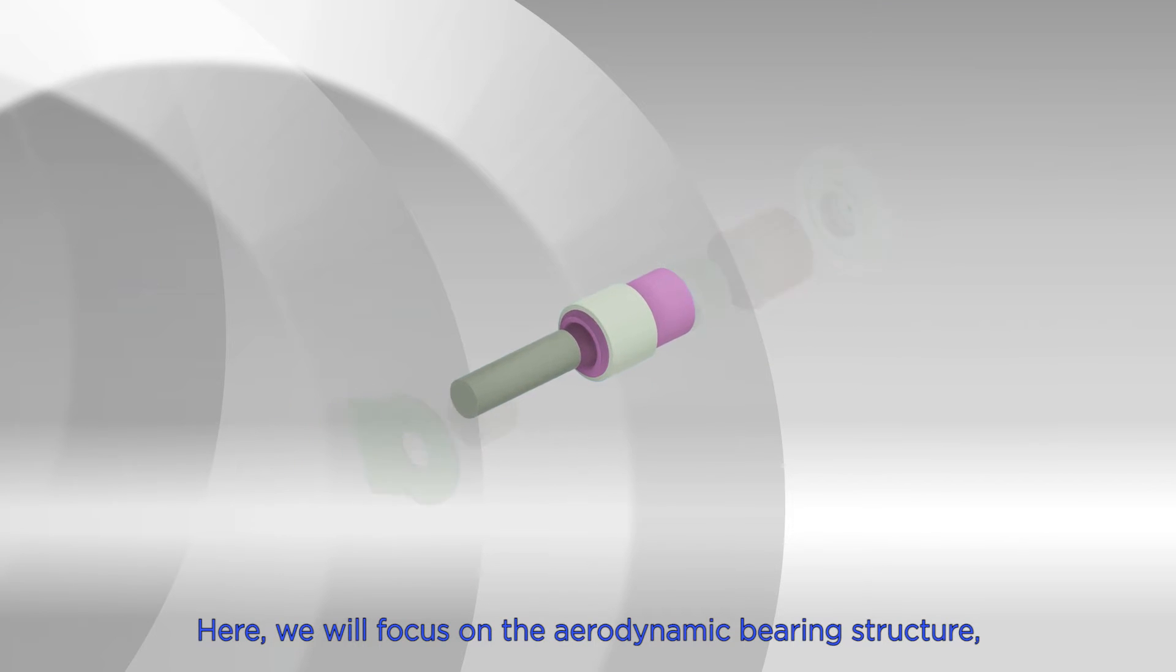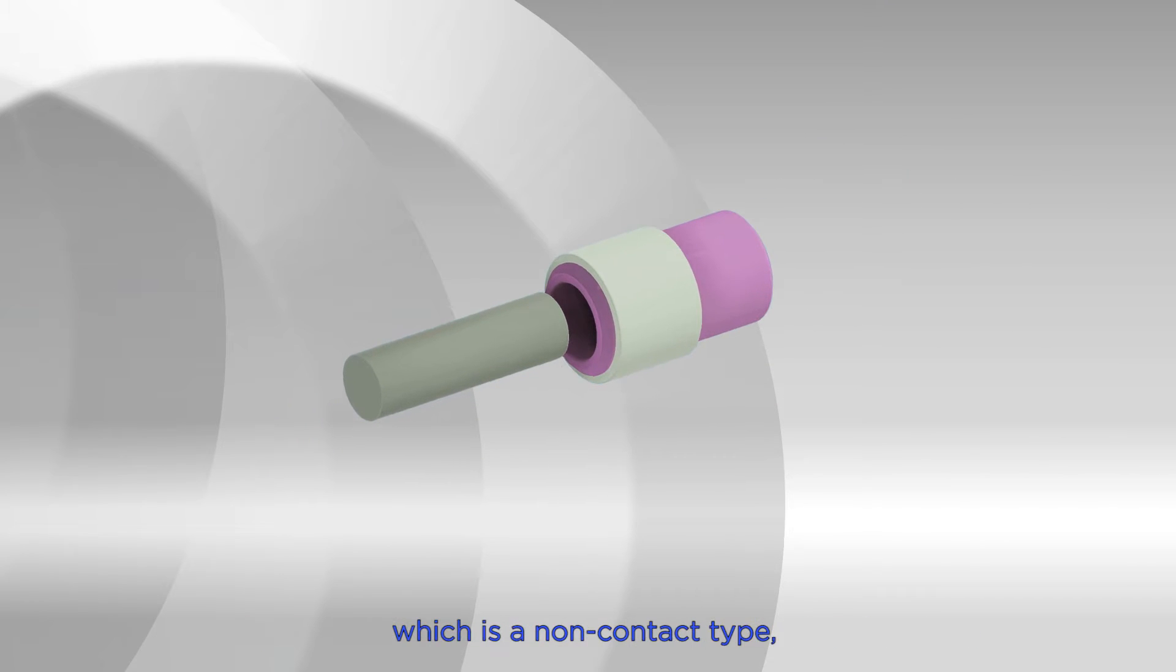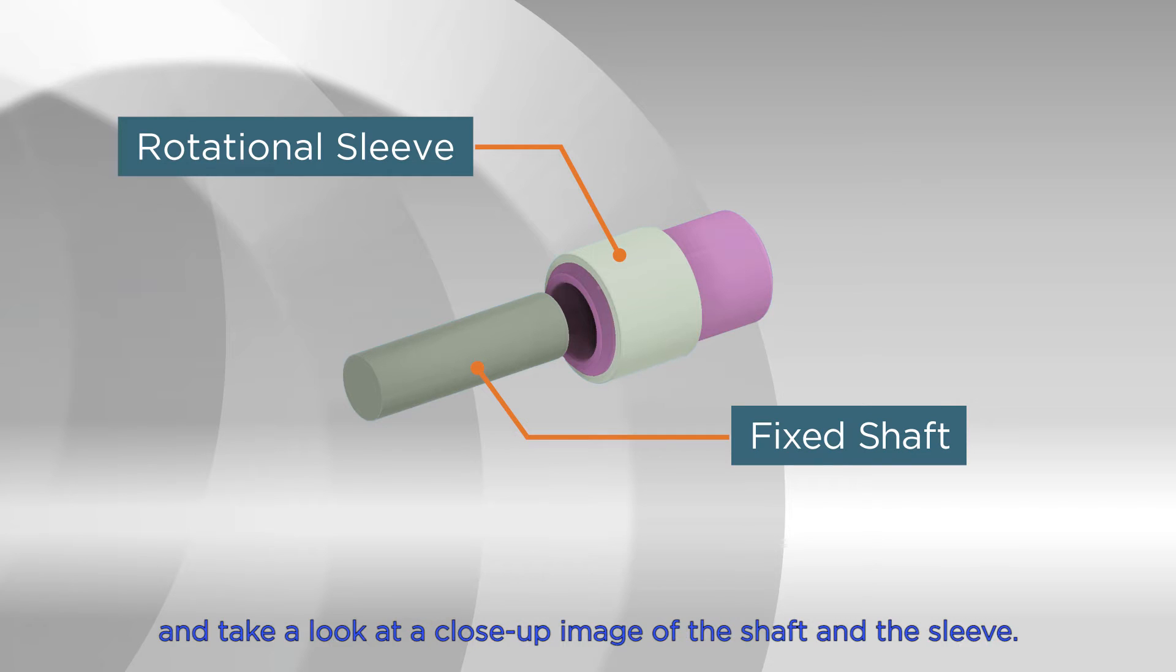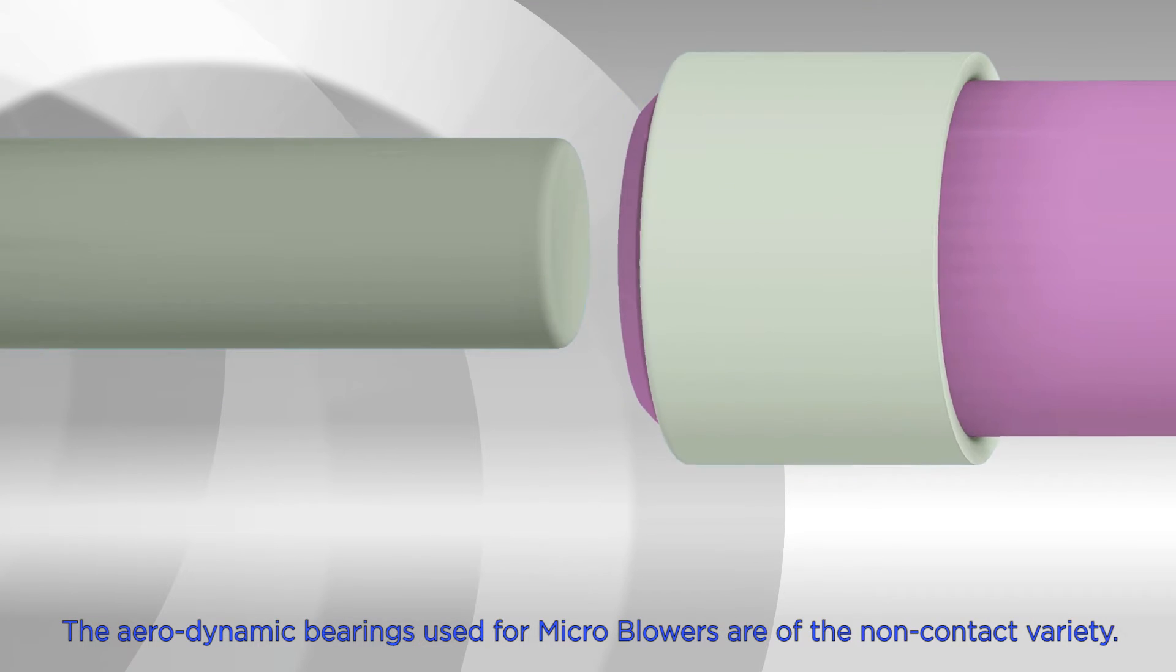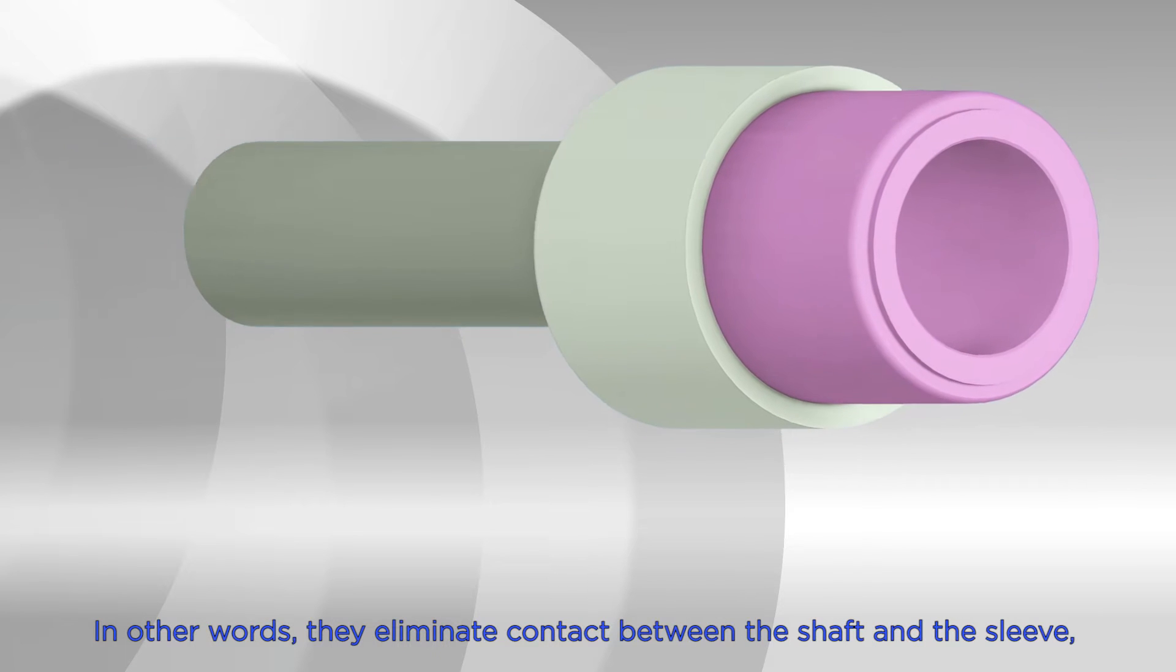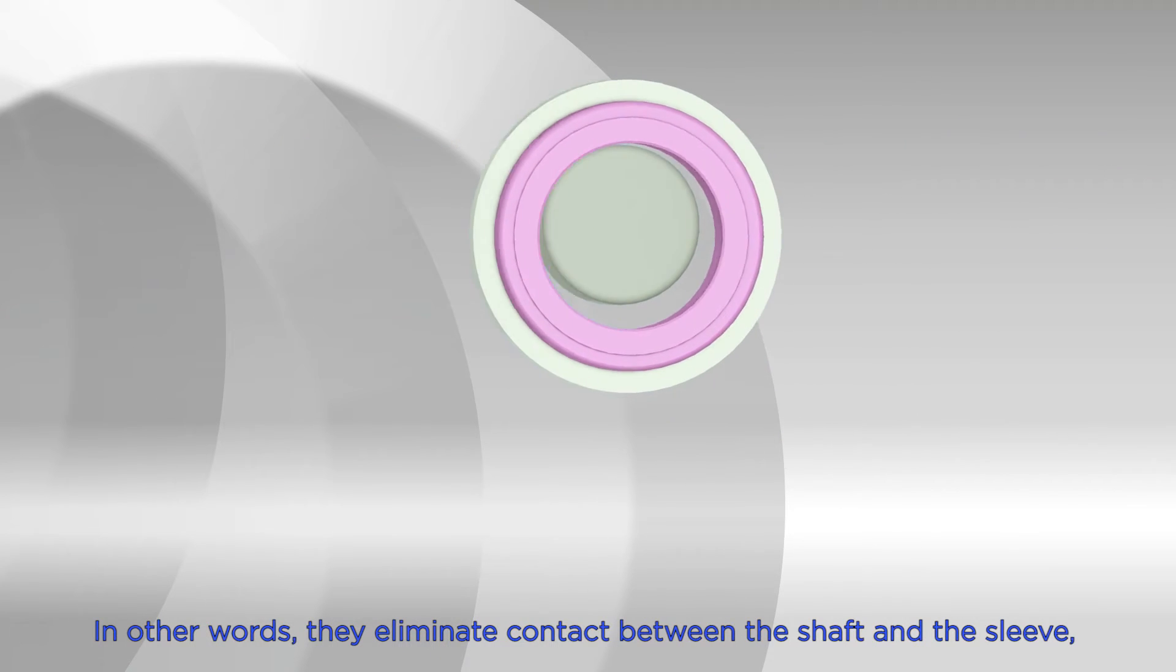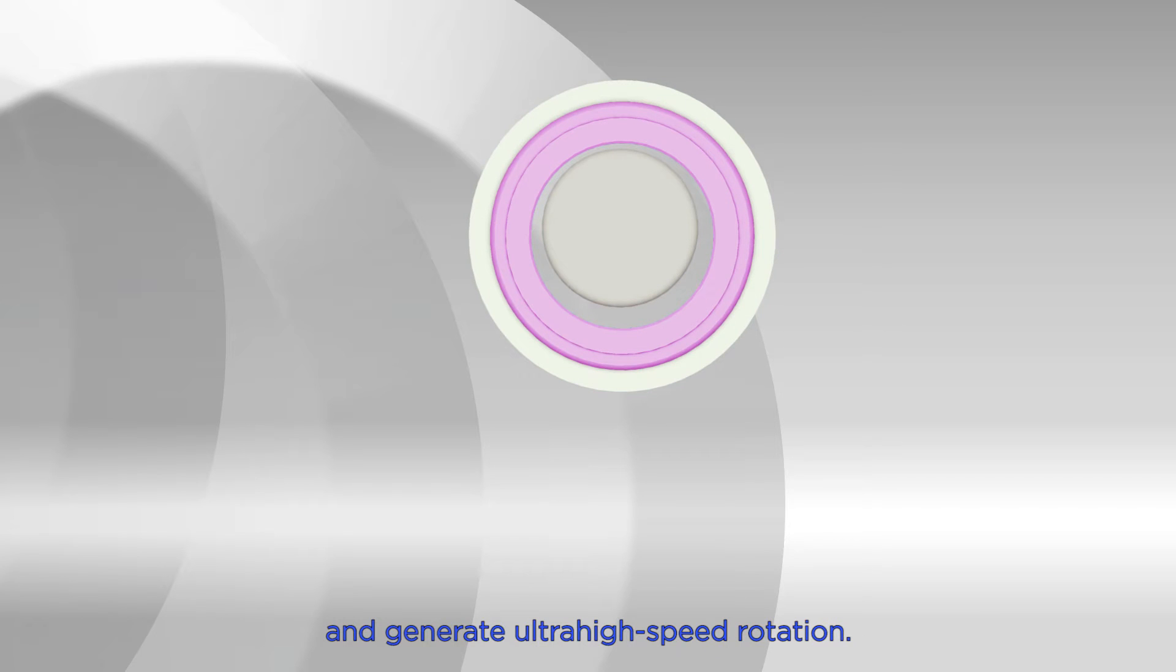Here we will focus on the aerodynamic bearing structure, which is a non-contact type, and take a look at a close-up image of the shaft and the sleeve. The aerodynamic bearings used for micro blowers are of the non-contact variety. In other words, they eliminate contact between the shaft and the sleeve and generate ultra-high-speed rotation. So let's see how non-contact rotation actually works.